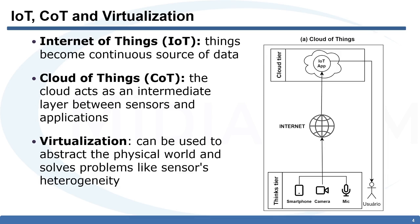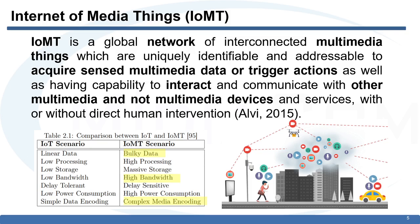The Internet of Things has become a continuous source of data, and traditionally the data is not consumed directly from the device that produces it. We have a middle layer that performs some kind of processing over this data stream. Cloud computing is a way of using IoT when the cloud acts as this middle tier between the data source and the data consumer. Virtualization is a way to abstract the physical world and solve problems like heterogeneity.